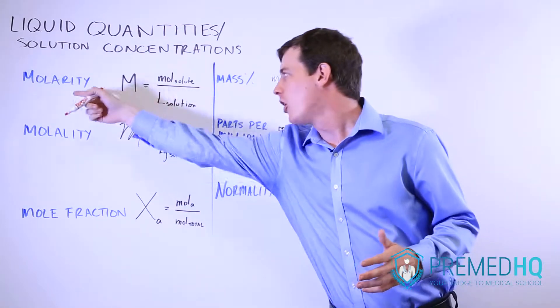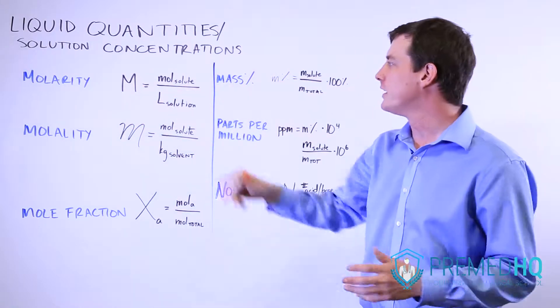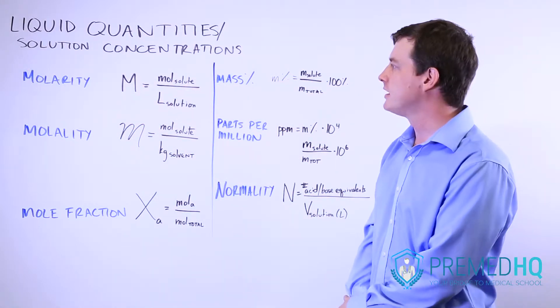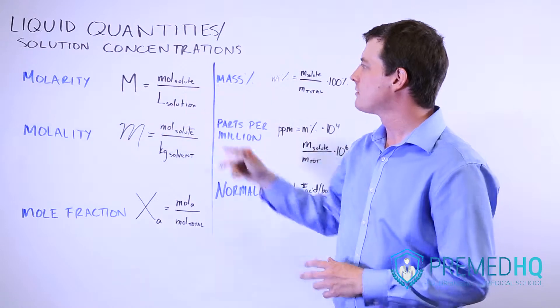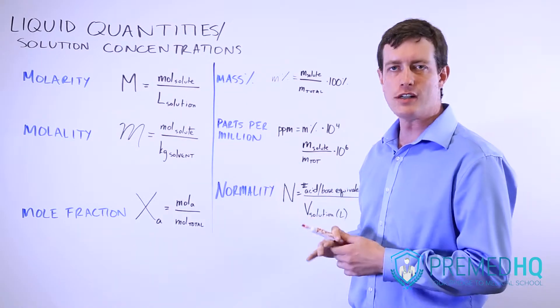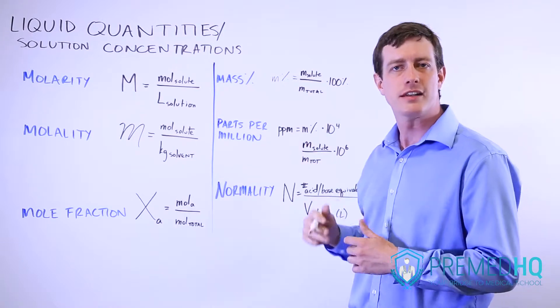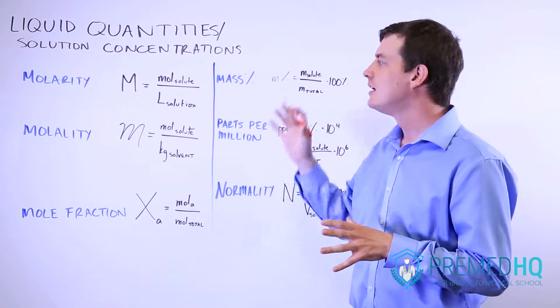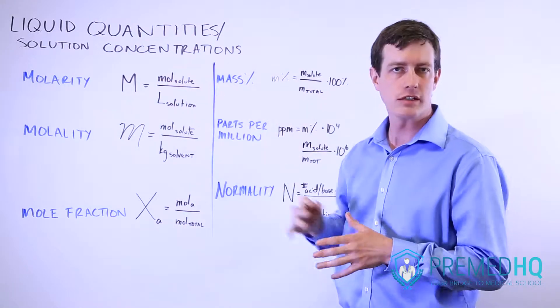We'll start with arguably the most important, molarity. The molarity of something is the number of moles of some solute that you have per liter of solution overall, and whenever you see square brackets that describe concentrations, that's the molarity that's being described there.